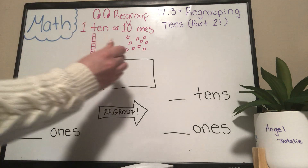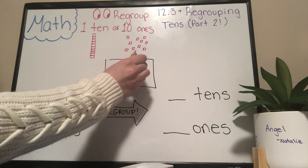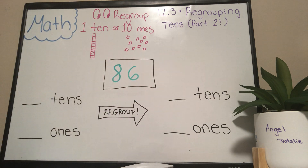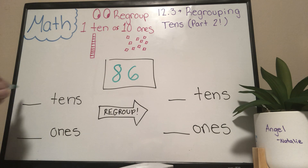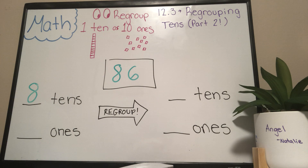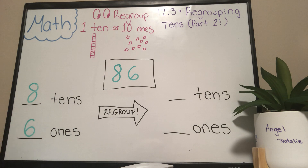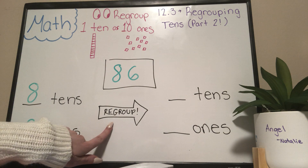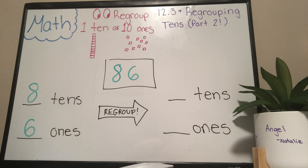The first problem we are working on, we have the number 86. How many tens are in 86? There are eight tens. So that must mean how many ones? Six ones. And now it is time to regroup. We're bringing one ten away from the ten spot and we're putting it in the one spot.